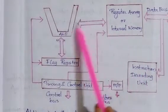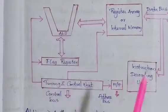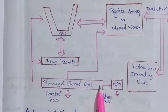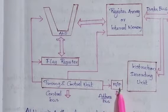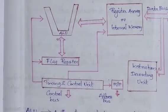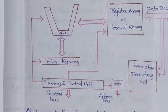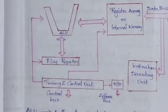This is the basic figure of a microprocessor. It contains an ALU, flag register, timing and control unit, register array or internal memory, instruction decoding unit, and PC or IP — that is, program counter or instruction pointer. The ALU performs arithmetic and logic operations on binary data.